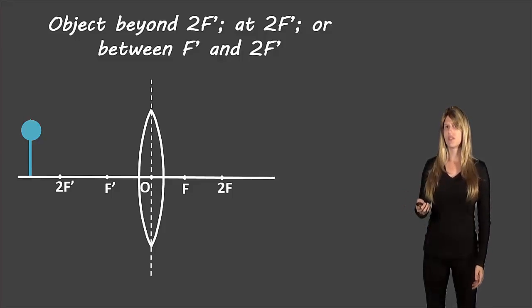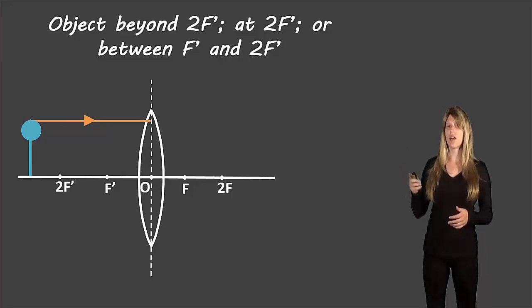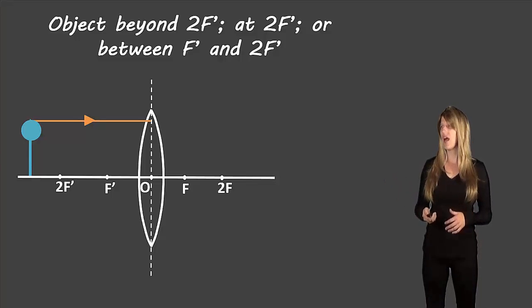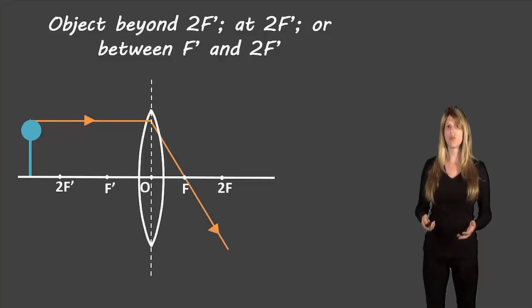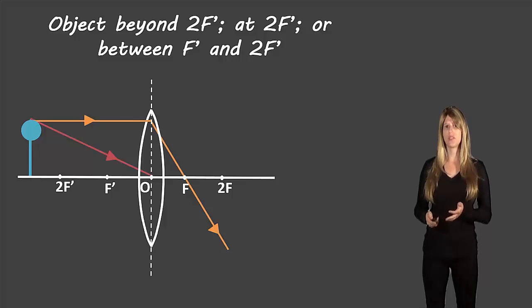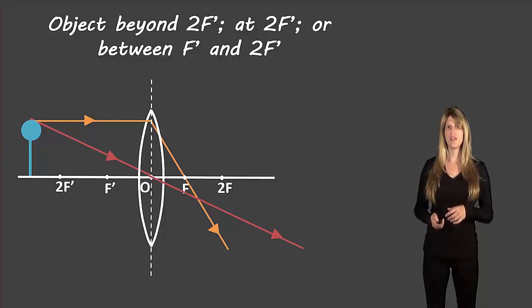Our first rule is that if we have an incident light ray that's parallel to the principal axis — drawing our arrowhead to show it's moving towards the lens — it will refract through the focus, going through f. We put another arrowhead to show the direction. Our second rule is that if we have a light ray moving through the optical center, it will continue on in the exact same direction; it won't refract, it'll just move through in a straight line. Those are our two rules for these three situations.